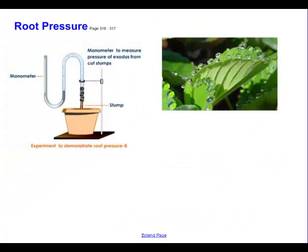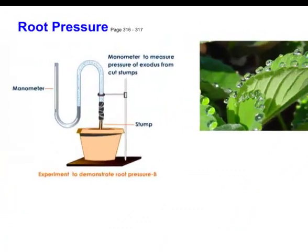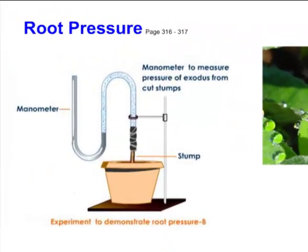Another source of water is from the bottom up and this is called root pressure. So for example, over here on the left hand side, if I take a plant in a pot here and I chop off the top of the plant, which isn't very nice, but nonetheless we have a stump left over. And then I attach to the stump this tube filled with water, I can actually watch the level of water here rise as pressure from the roots.